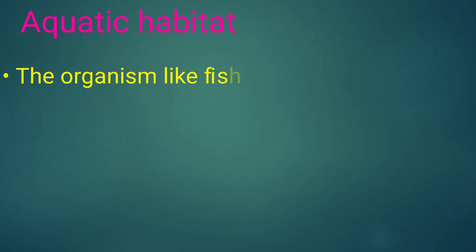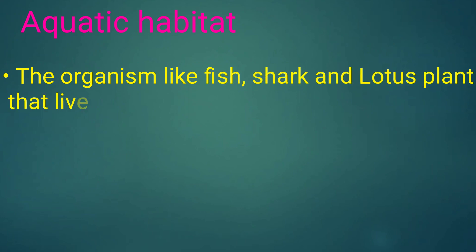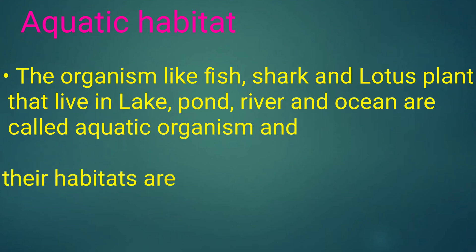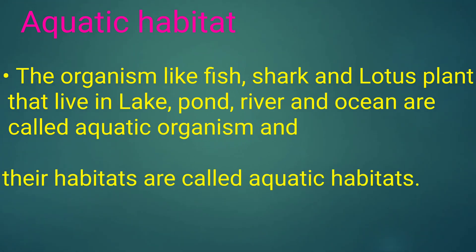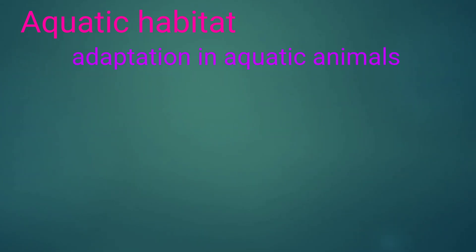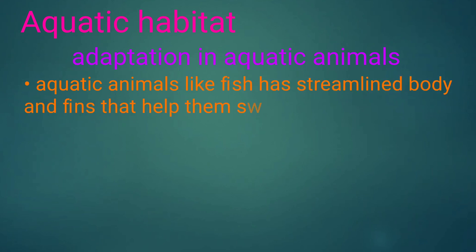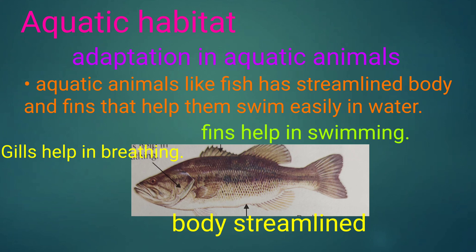Aquatic habitat. Organisms like fish, shark, and lotus plants that live in lakes, ponds, rivers, and oceans are called aquatic organisms, and their habitats are called aquatic habitats. Aquatic animals like fish have a streamlined body and fins that help them to swim easily in water.